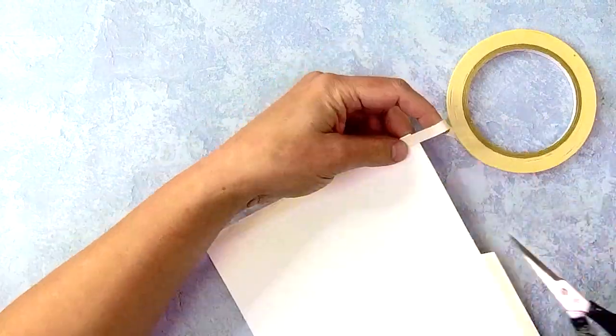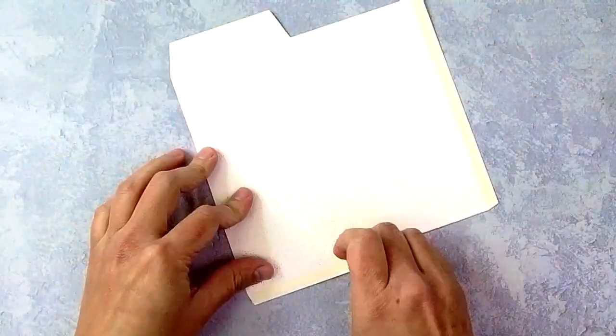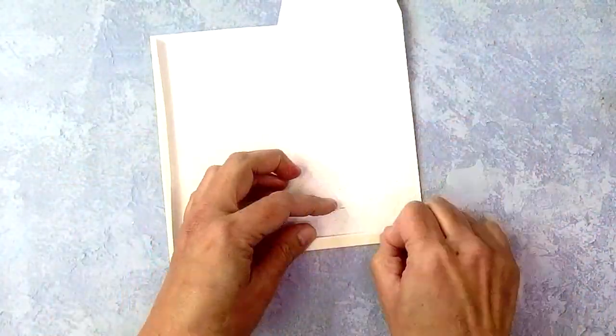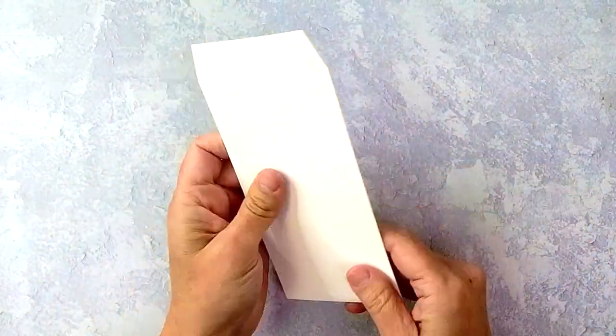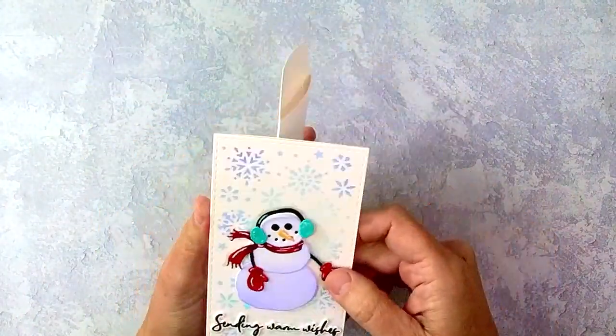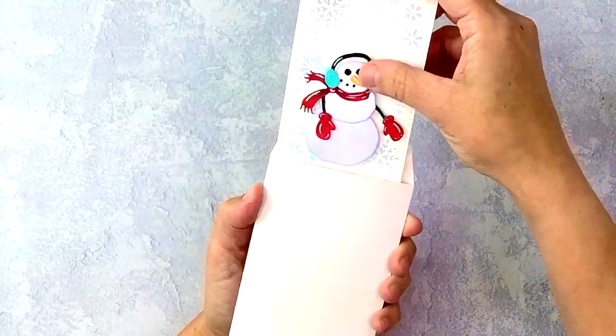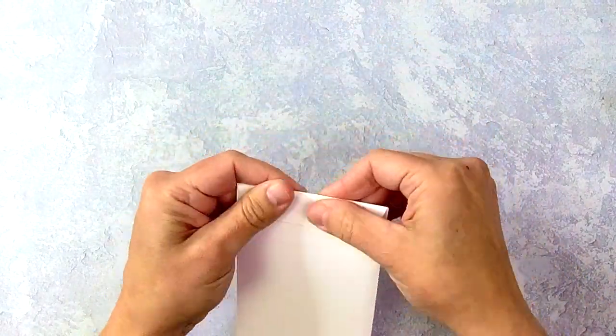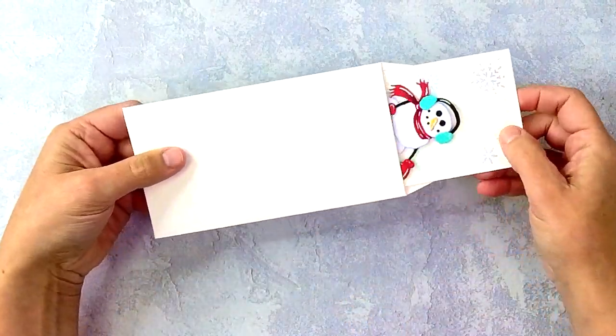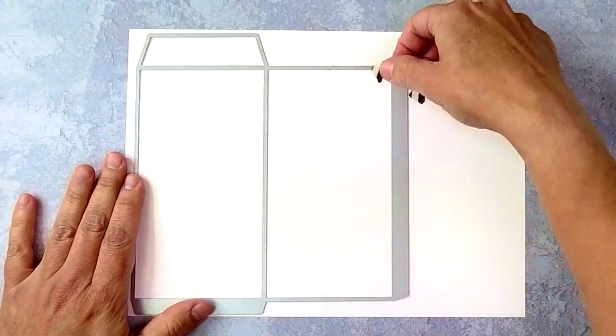Then once you do that, you're going to add adhesive just to the flaps, so just to that bottom flap, just to that side flap, fold them in, and then you can just easily close up that envelope. You have a perfect seamless envelope with or without texture, however you want to do it, and it will fit your 3x6 mini slimline card perfectly. And adding that little bit of texture is really just the perfect touch to finish off those cards.